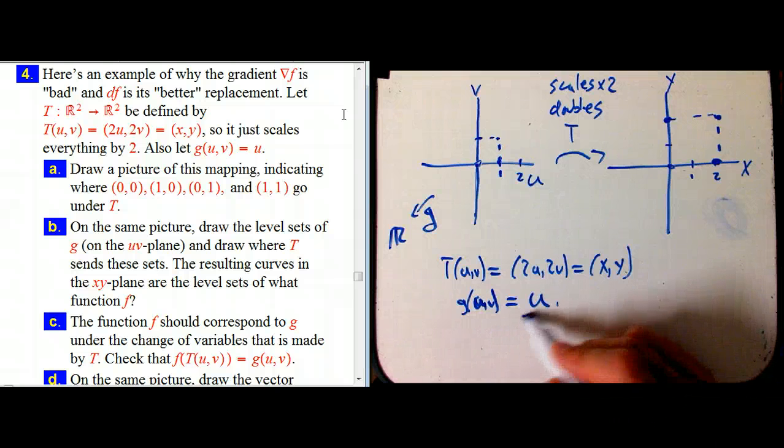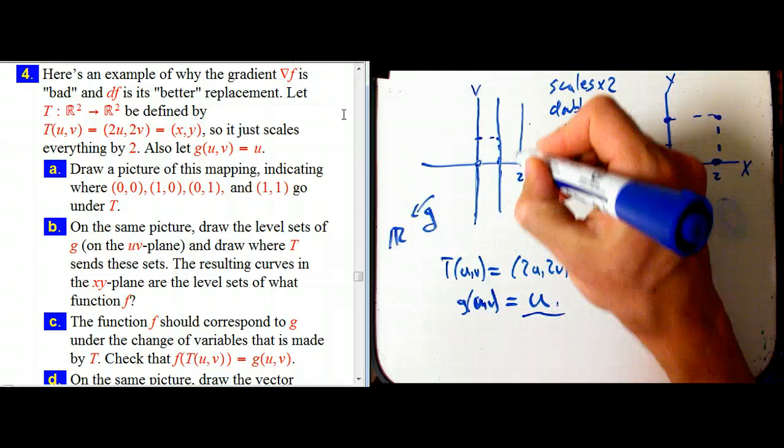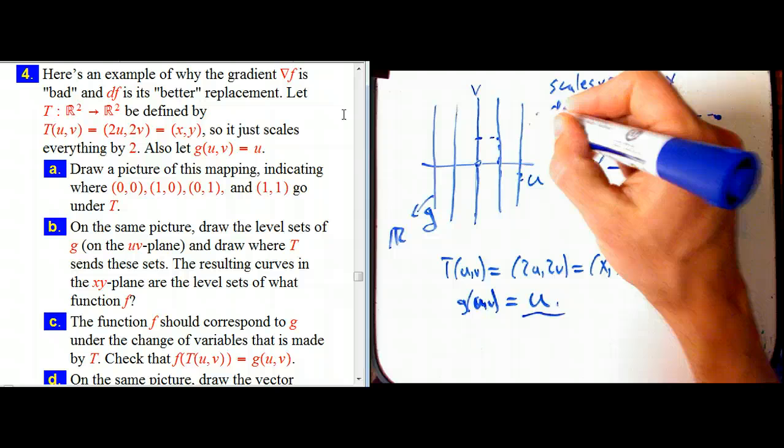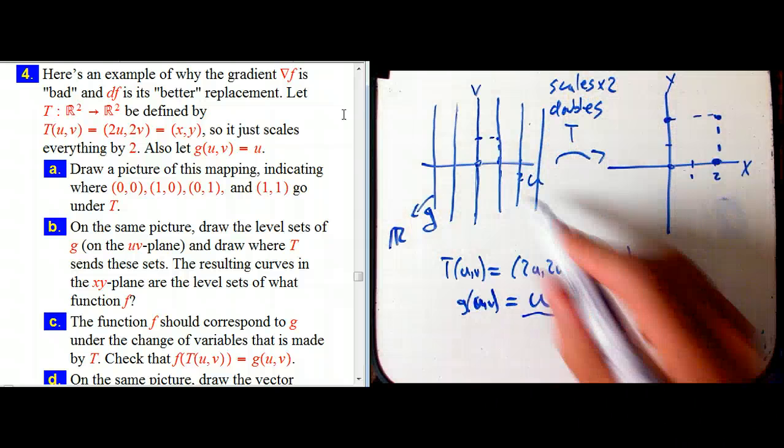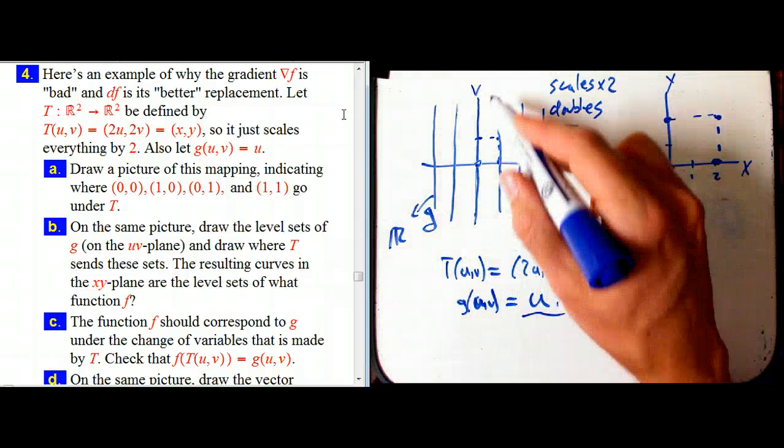Now the level sets of g, oh, those are just these guys. Oh, I should have said the integer level sets because we really want to be careful here about scale. So there's the integer level sets of g. Now where do those get mapped to? Well, these guys.